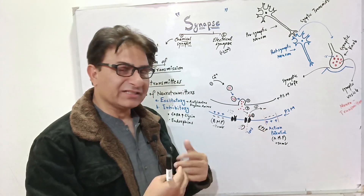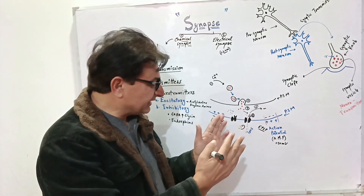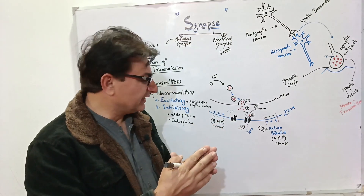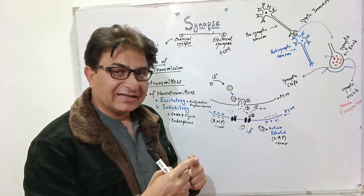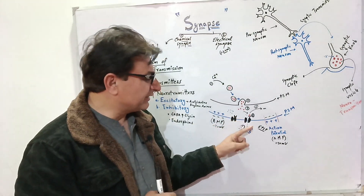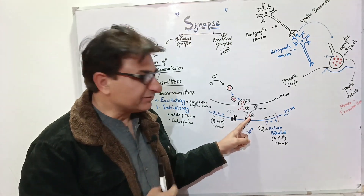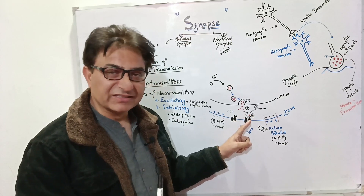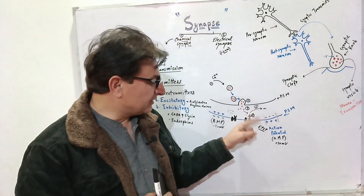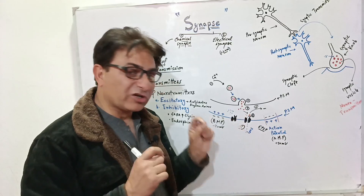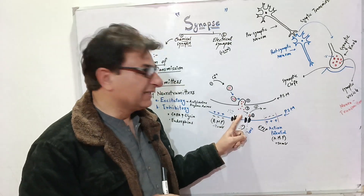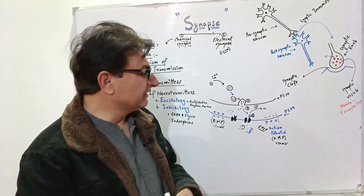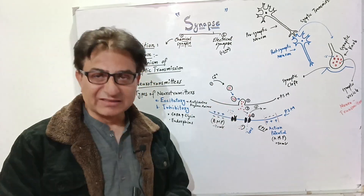After excitation, the permeability stops and the membrane will not remain in an excited state. It becomes inhibited due to the breaking down of acetylcholine by an enzyme called cholinesterase. Cholinesterase breaks the acetylcholine, stops the permeability of sodium, and makes the synapse ready for the next transmission of information through the synaptic cleft.